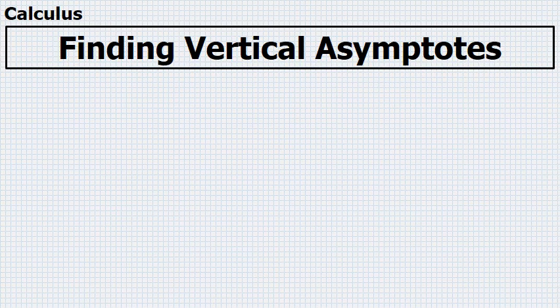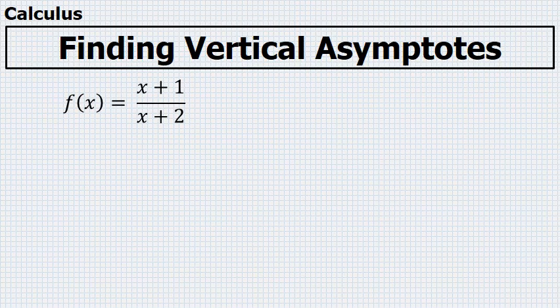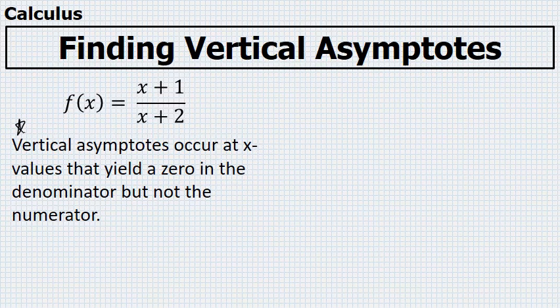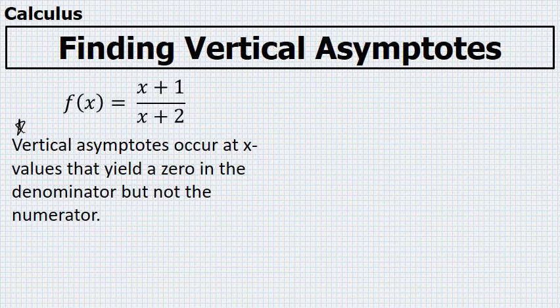Let's discuss how you can find the location of vertical asymptotes given a function. For example, the function f of x equals x plus 1 over x plus 2 will have a vertical asymptote at any x value that yields a 0 in the denominator, but not the numerator.